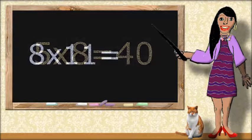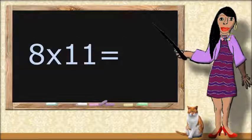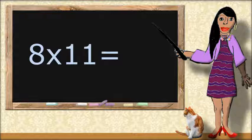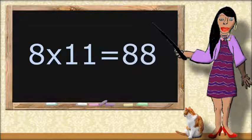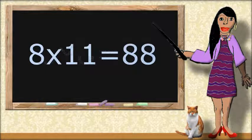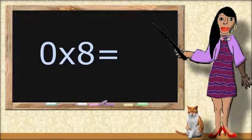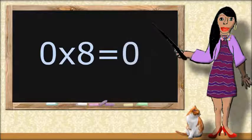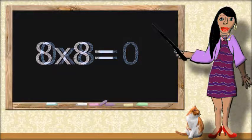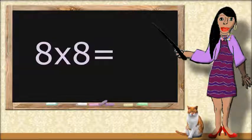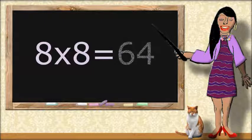8 times 11 equals... 88. 0 times 8 equals... 0. 8 times 8 equals... 64.